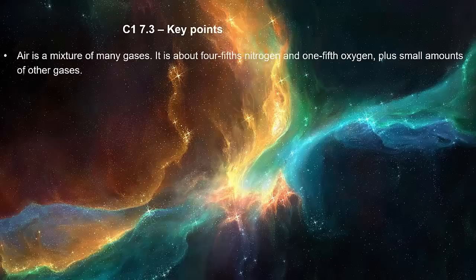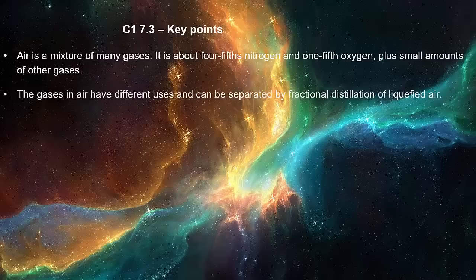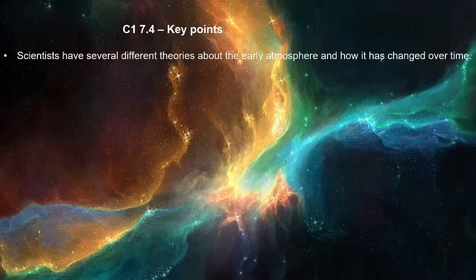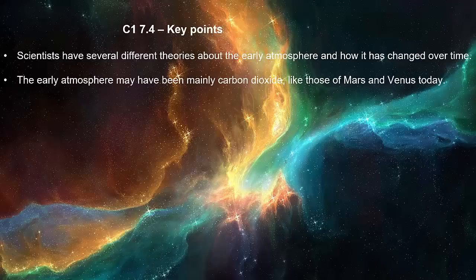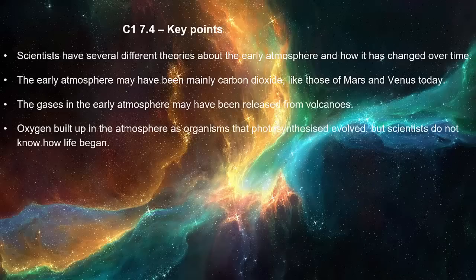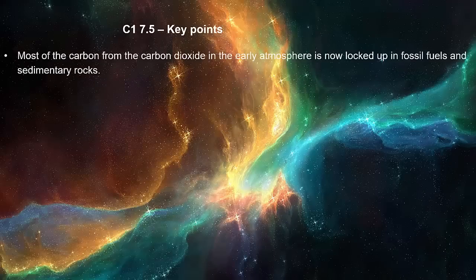Air is a mixture of many gases — about four-fifths nitrogen and one-fifth oxygen, plus small amounts of other gases. The gases in air have different uses and can be separated by fractional distillation of liquefied air. The composition of air has remained roughly constant for about 200 million years. Scientists have several different theories about the Earth's atmosphere and how it has changed over time. The early atmosphere may have been mainly carbon dioxide, like those of Mars and Venus today. The gases in the early atmosphere may have been released from volcanoes. Oxygen built up in the atmosphere as organisms that photosynthesize evolved, but scientists do not know how life began.